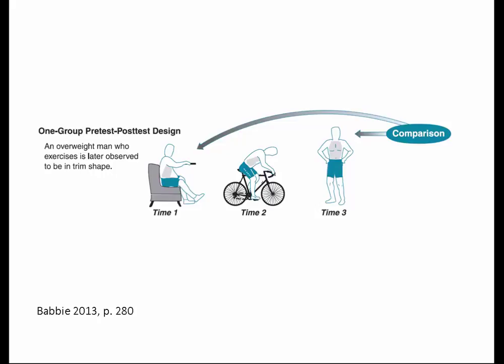A better design is what we call a one-group pre-test post-test design. Now I measure the fitness level of certain people, then tell them to do sports, then measure fitness again afterwards and compare. You can argue that the only thing that happened in the meantime was the sports, so whatever differences I observe between time one and time three must be due to what happened in between — that's the one-group pre-test post-test design.